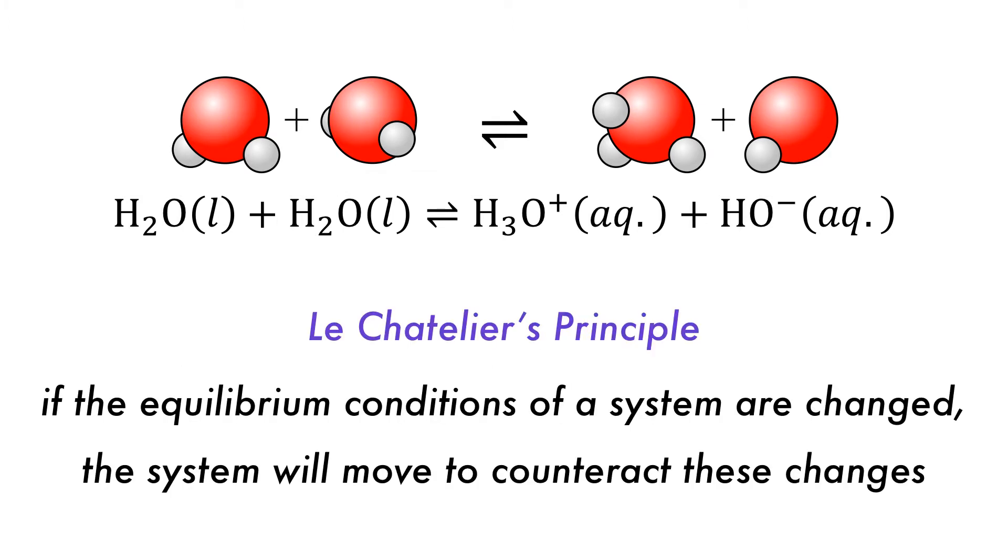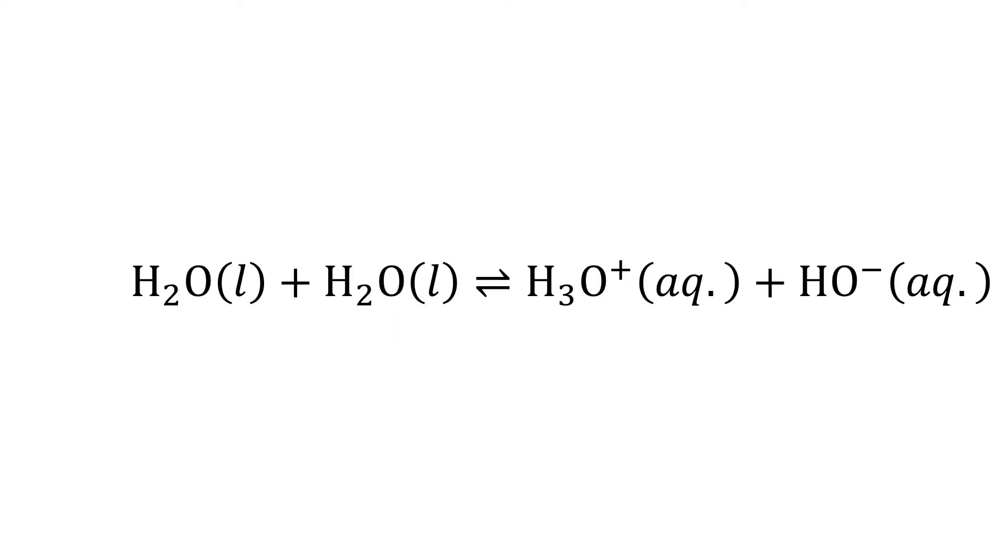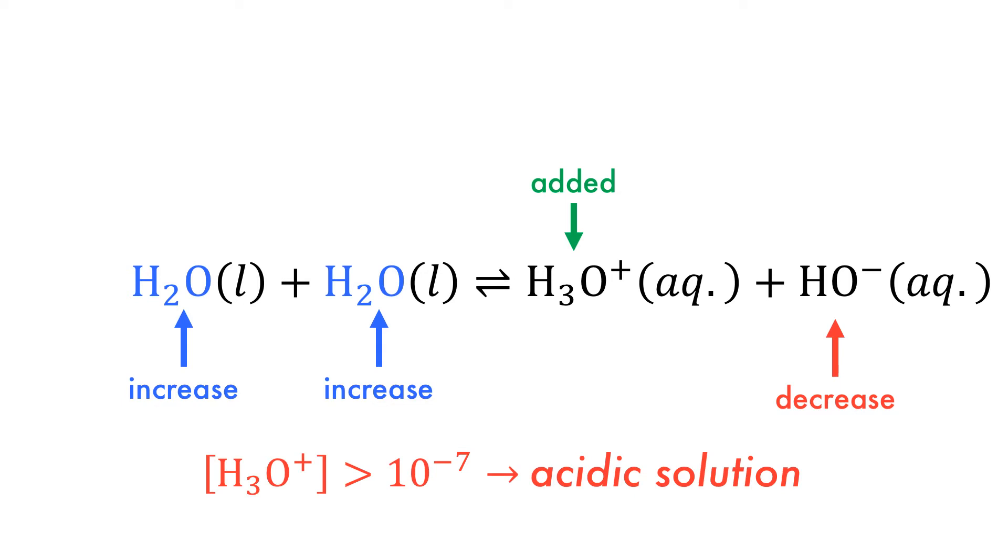If acid or base is added to pure water, the system will be disturbed, and from Le Chatelier's principle, we know that the system will move to counteract these changes. If acid is added, then in line with Le Chatelier's principle, the system will move to consume some of it, which will reduce the overall hydroxide concentration by forming more water. This will create an imbalance and an acidic solution, as the concentration of hydronium is greater than 10 to the minus 7.